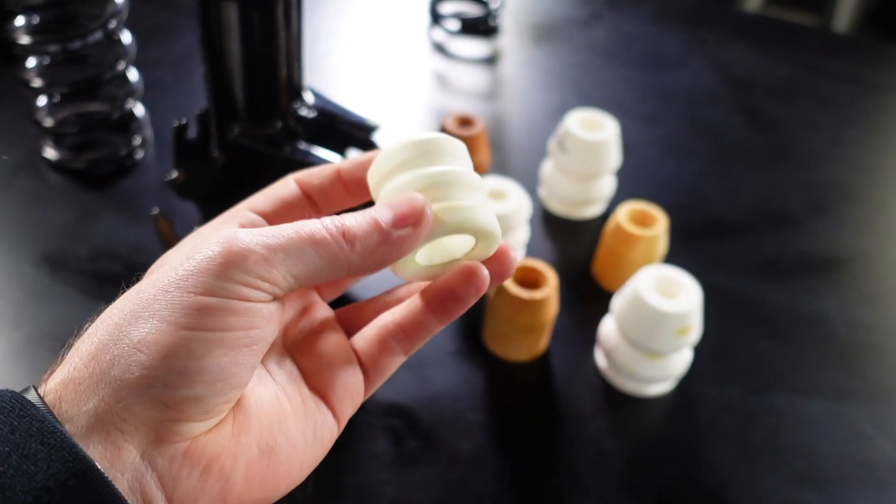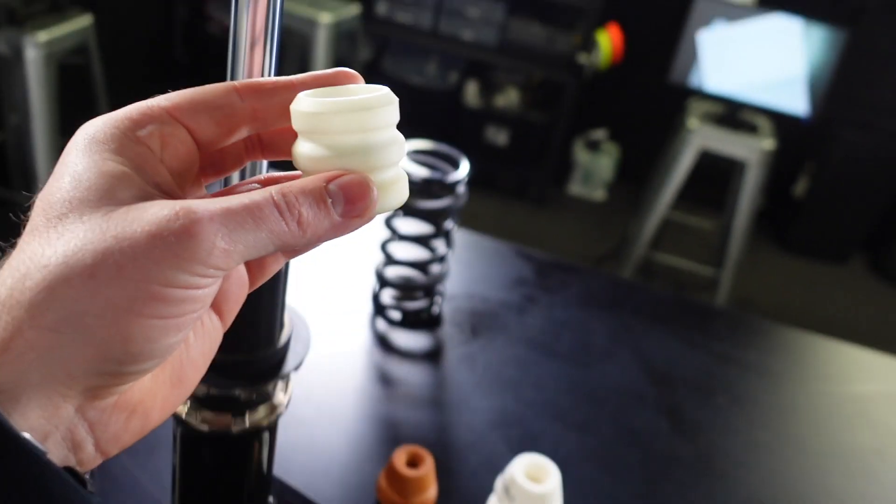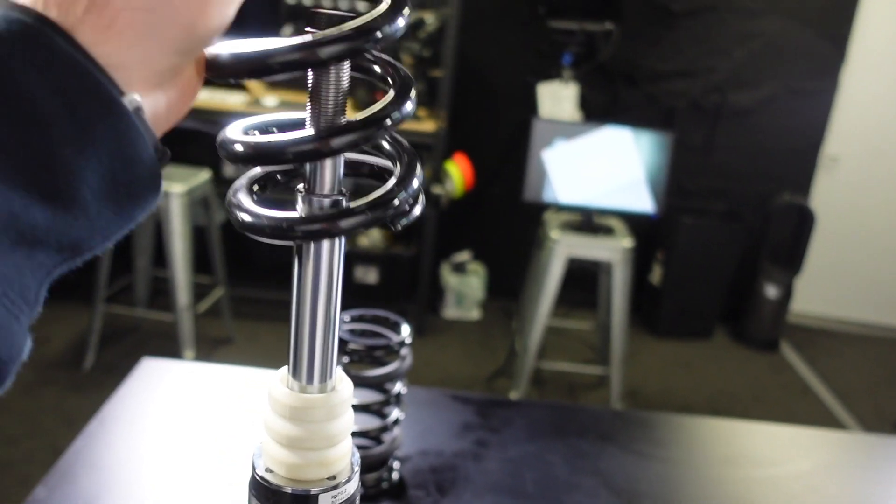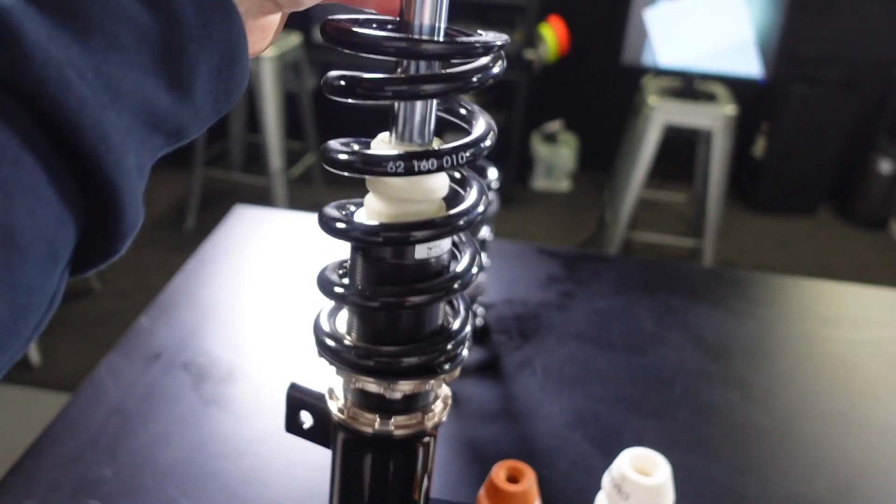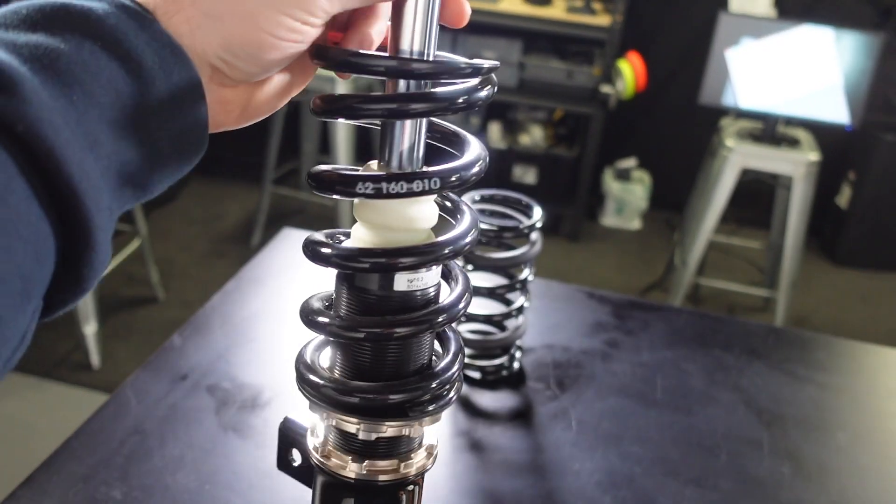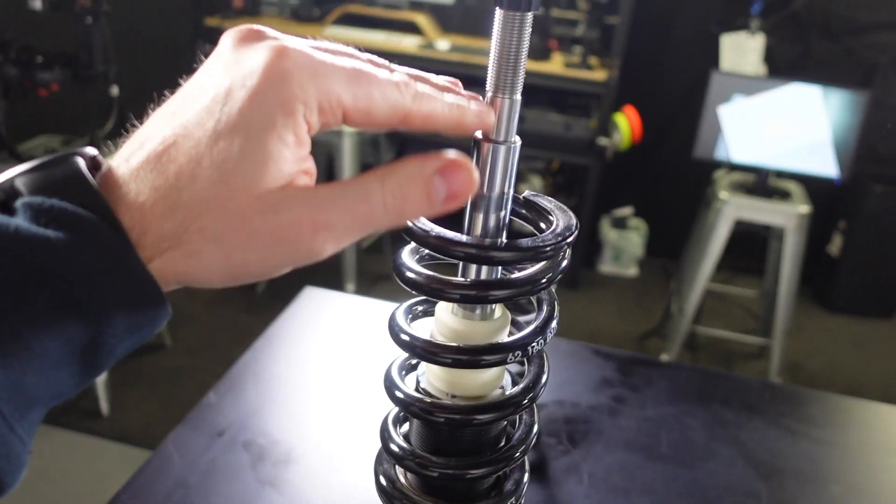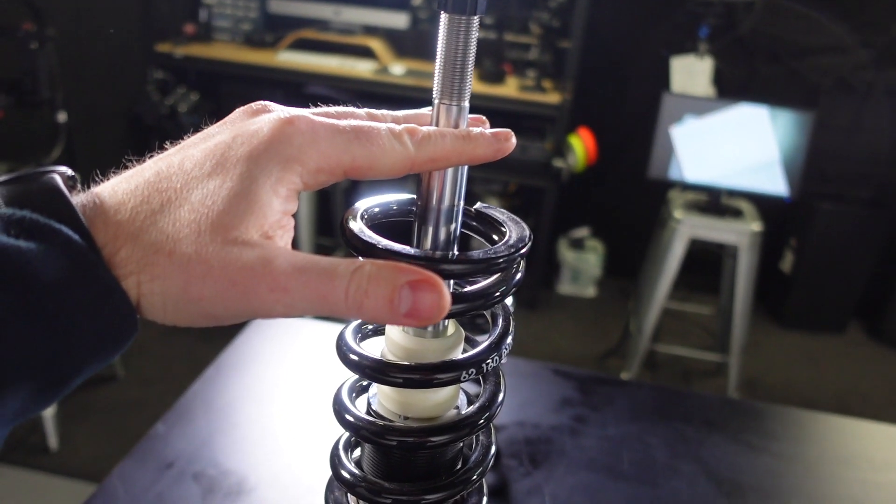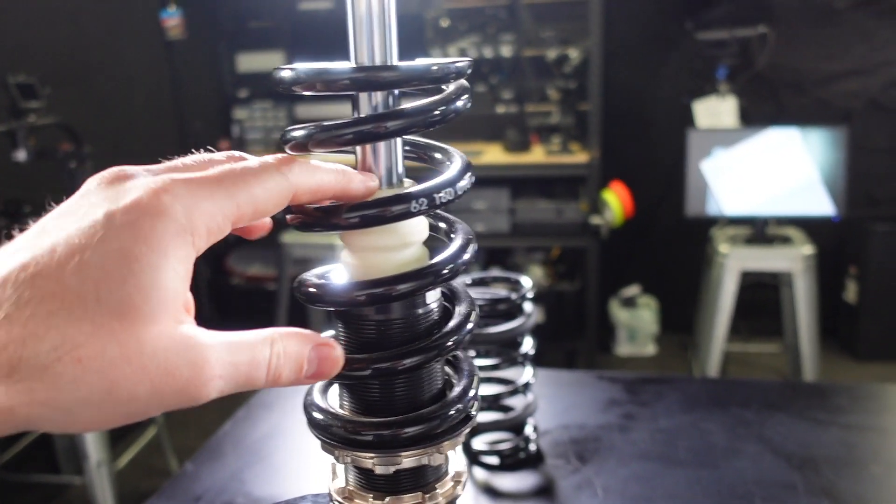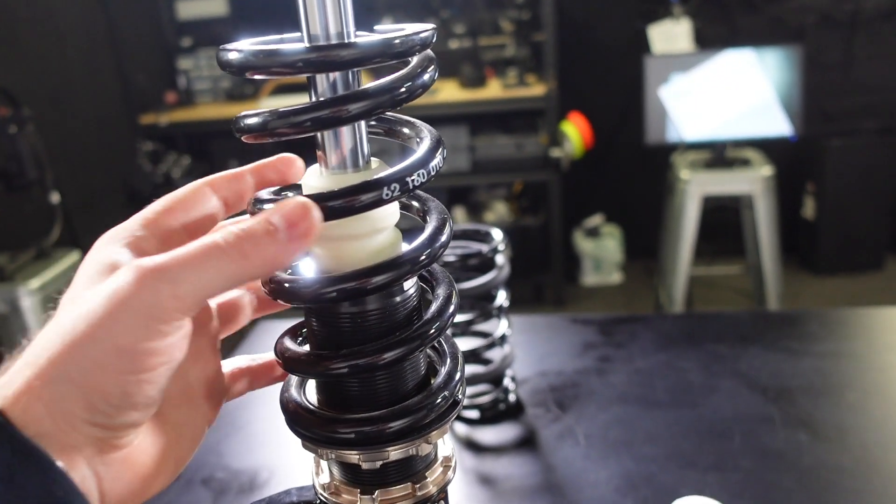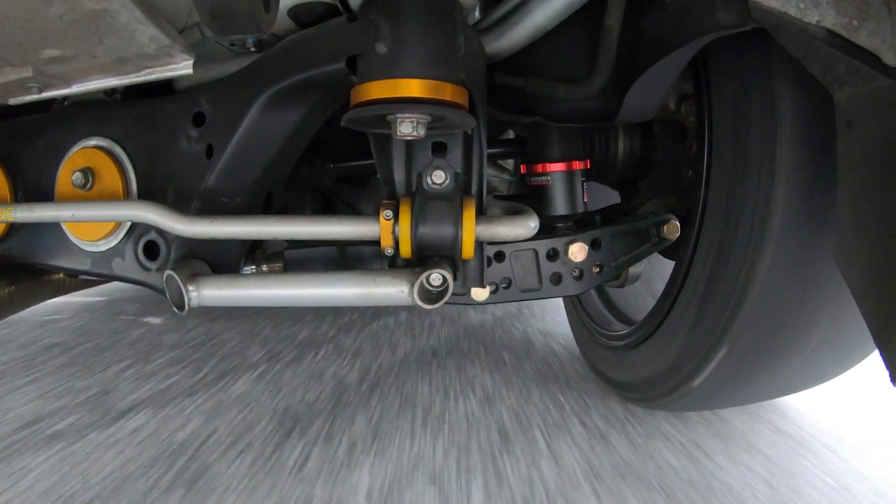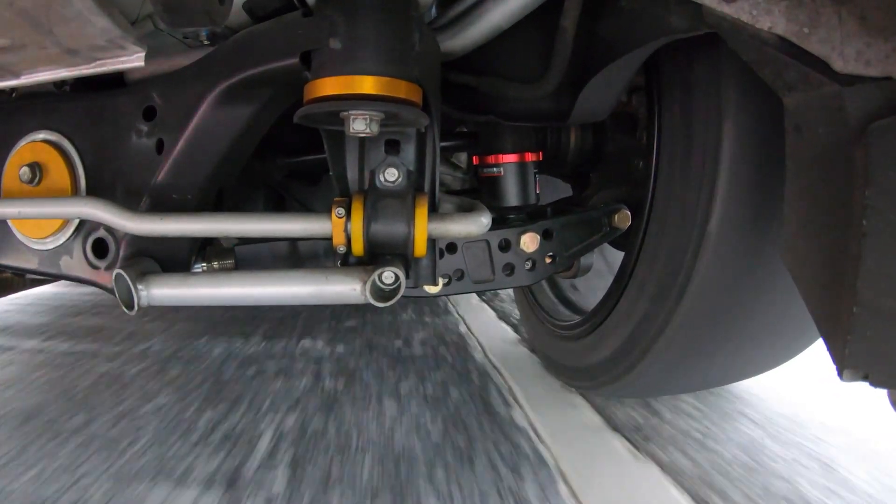The way a bump stop is typically packaged in a suspension is normally sitting on a damper such as this, and in a coil over application it'll sit inside there underneath the spring. So for the bump stop to become engaged, you've normally got a top hat sitting on here on top of the damper. The entire spring travel would have to be used up until the top hat comes in contact with the bump stop at that point.